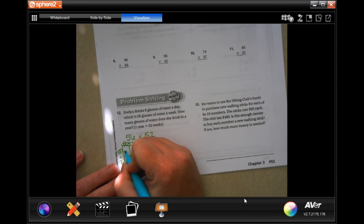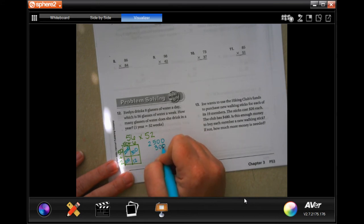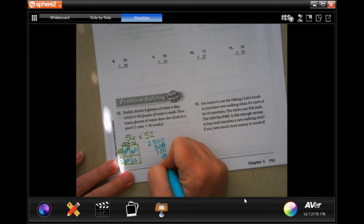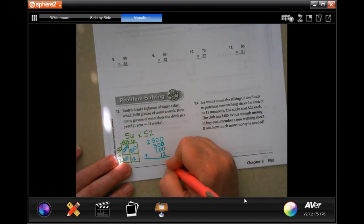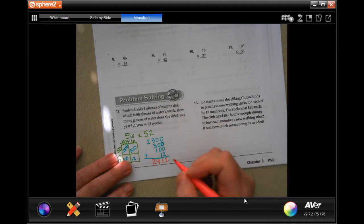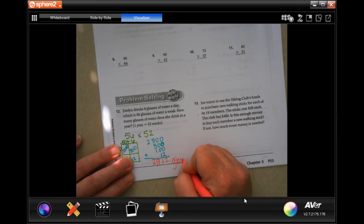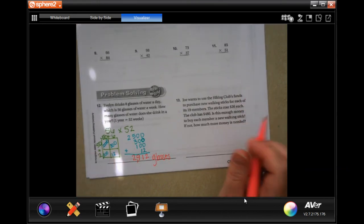I'm going to put 50 plus 6 and 50 plus 2. You don't have to put the plus sign here. I just like to remember how I got my 56 and my 52. 5 times 5 is 25 plus those two zeros. 5 times 6 is 30. You still have to add in that extra zero. 2 times 5 is 100. 2 times 6 is 12. I'm going to come over here, line them up. Add them up. 2, 1, 9, 2. That is 2,912 glasses. It wants to know how many glasses of water.